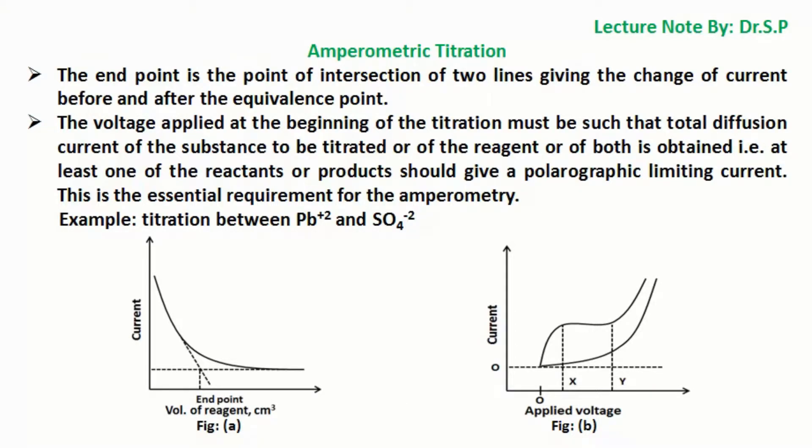For example, titration between lead ion Pb²⁺ and sulfate ion SO₄²⁻. A plot of simple illustration of amperometric titration is shown here. The titration of lead 2 salt with sulfate ion is the example of this type. In this case,